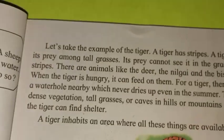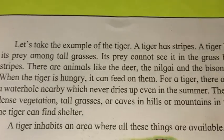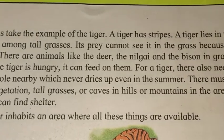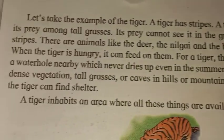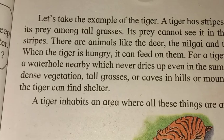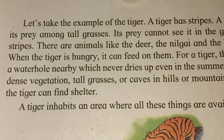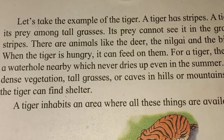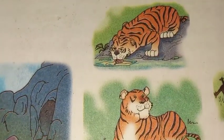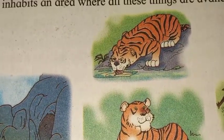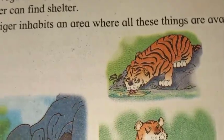Now, come to page number 9. Let's take the example of a tiger. A tiger has stripes. A tiger lies in wait for its prey among tall grasses. Look — this is the design of the tiger. They look like tall grasses because of the stripe pattern.